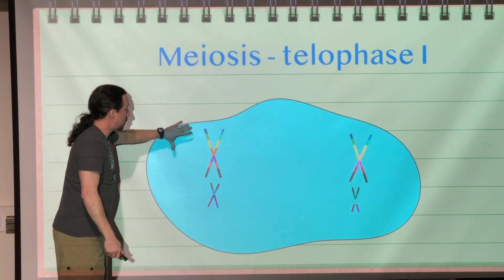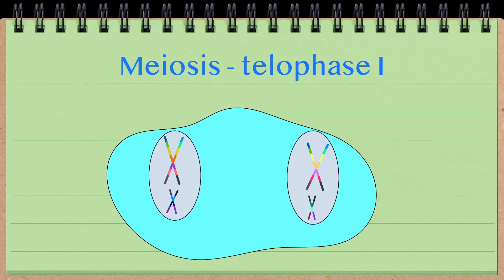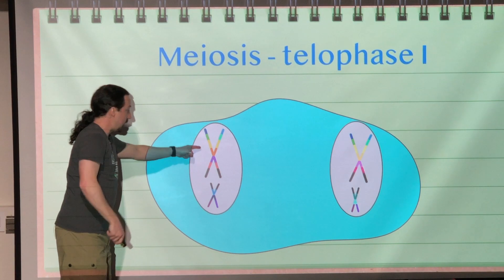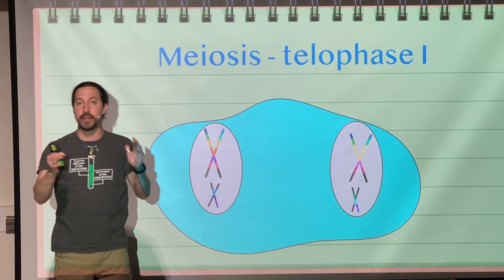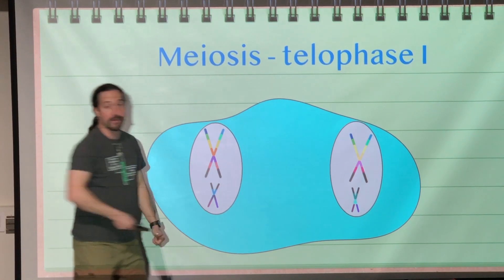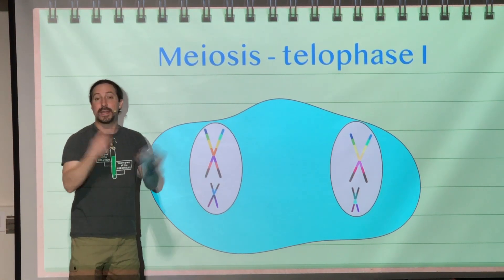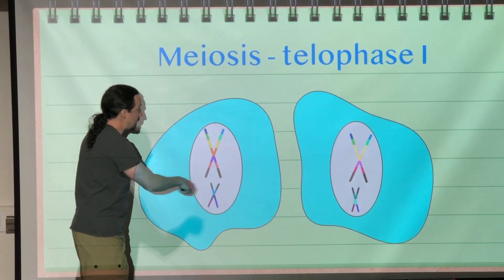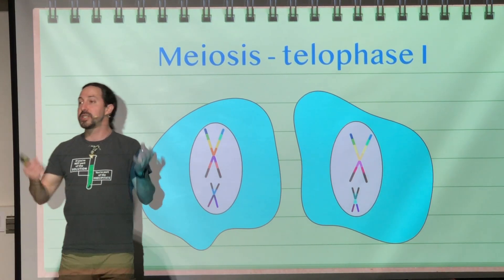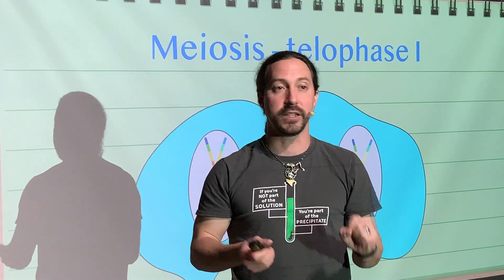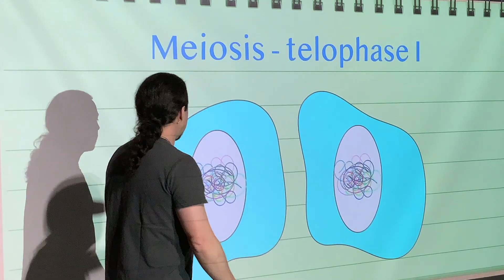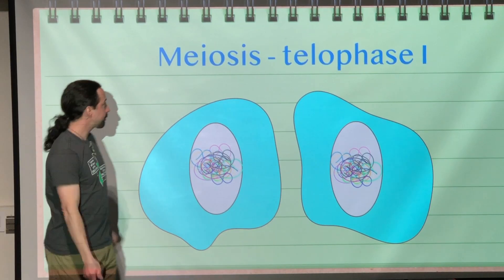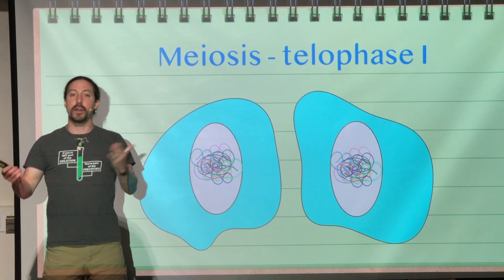Our chromosomes are now separated. This chromosome and this chromosome have the same genes, but they're no longer within the same nucleus — they have been separated out. When our cells divide, these cells are haploid, each cell only containing one set of genes. The chromosomes decondense back into the form of chromatin, which leads us to meiosis II.